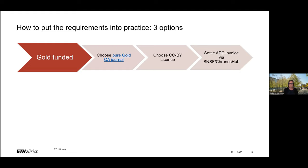In principle, depending on the journal you publish in, there are three options to implement these requirements in practice. The first option applies if you publish in a pure gold open access journal. In this case, you simply have to make sure you select the correct license when submitting your article and then direct the APC invoice to the SNSF for payment through the AcronosHub platform.